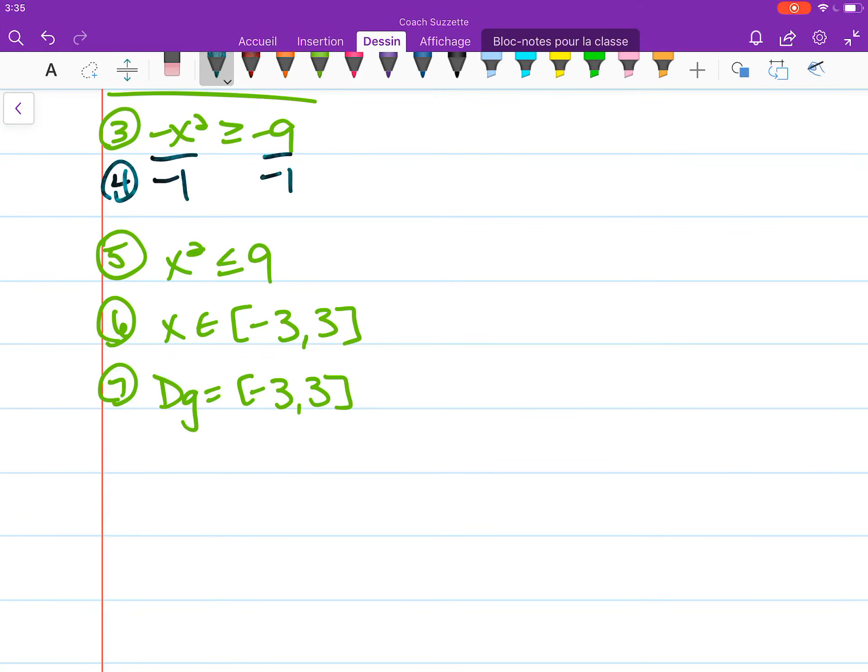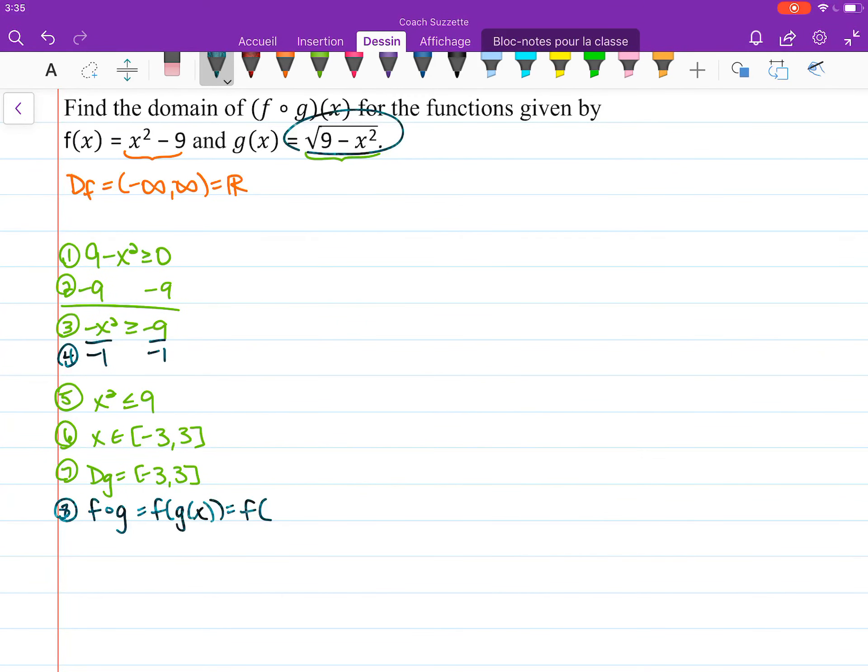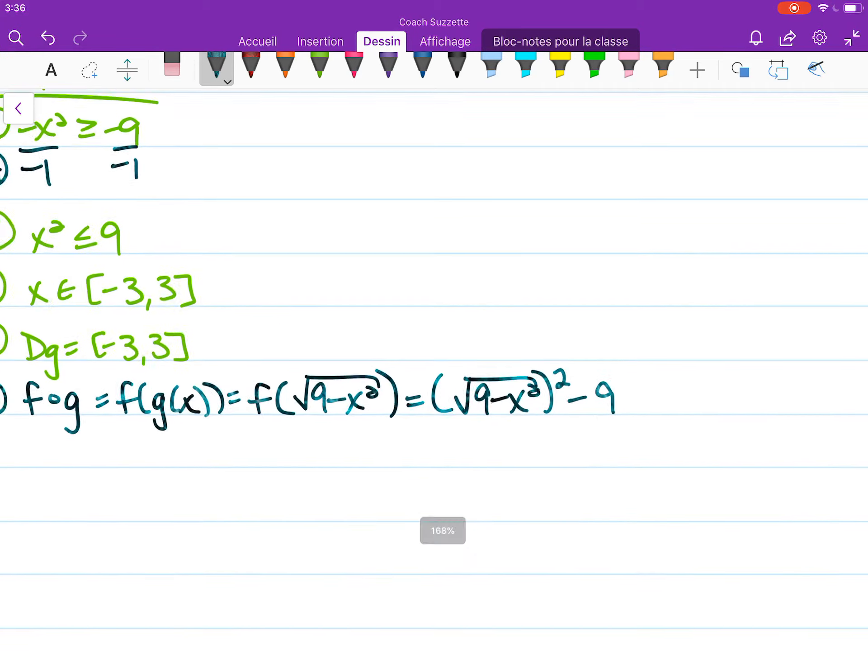What is f(g(x))? f(g(x)) means we're plugging g(x) into f, so f(√(9 - x²)) equals (√(9 - x²))² - 9.